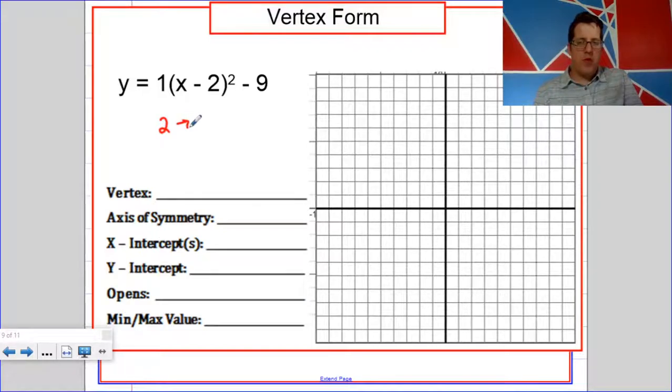So you're going to find the vertex the same way that you did for the absolute value. The vertex of the parent function is at the origin. But this one is shifted two units right and nine units down. So the vertex is two, negative nine.